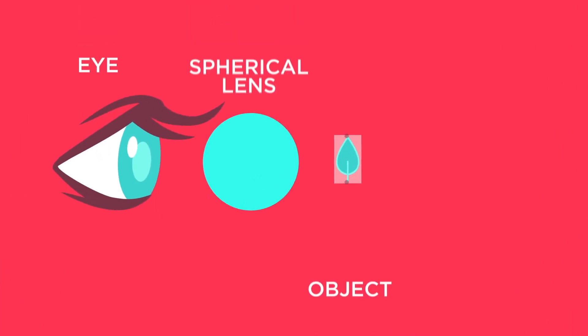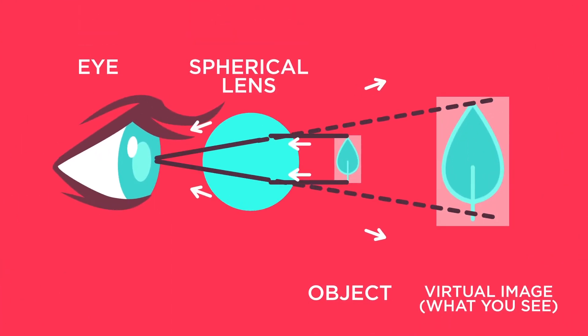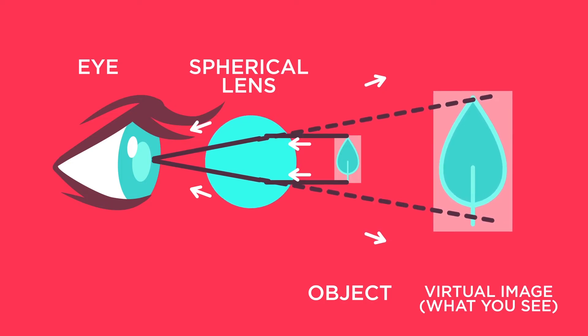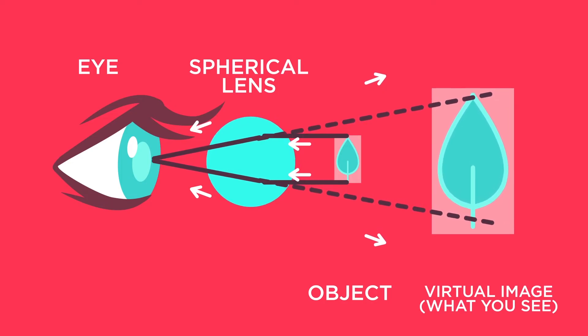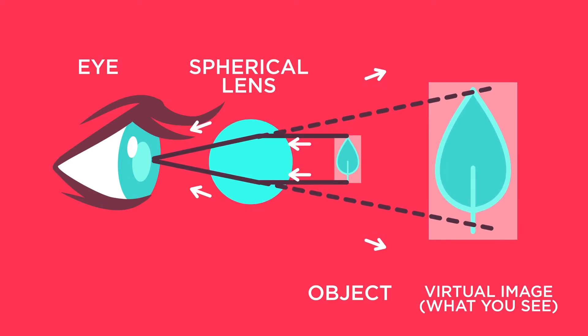The smaller a circle is, the more curved its surface. And the higher the curvature of a lens, the more the light passing through it can be bent. In the highly curved lenses used in the foldscope, light can be bent at very sharp angles. The smaller the lens, the sharper the angle, the higher the magnification.